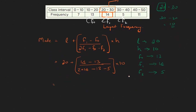Now we calculate: 20 plus (14 minus 13) divided by (2 times 14 minus 13 minus 5), multiplied by 10. That is, 14 minus 13 equals 1. This quantity multiplied by 10 gives us 1 divided by the denominator, times 10. So 20 plus 1 equals 21.